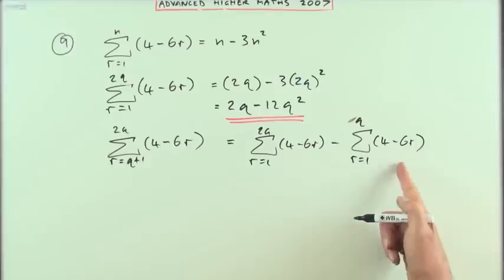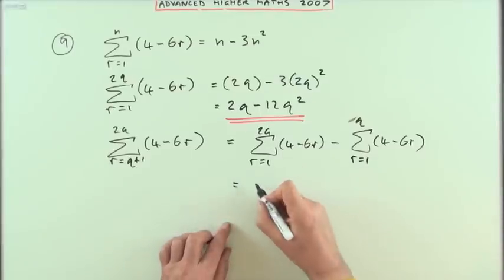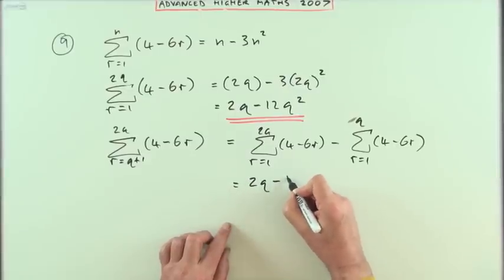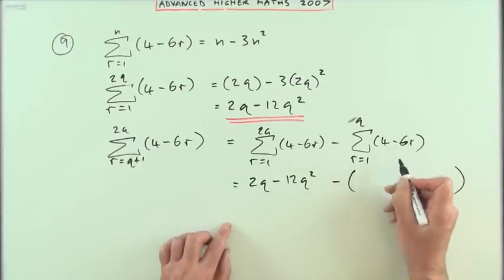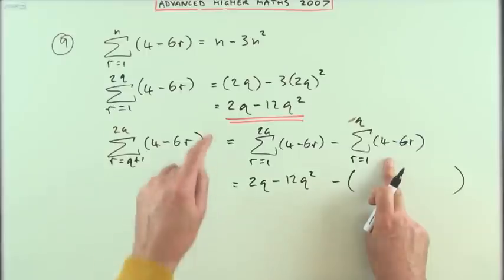Well, I've got that formula, so it's just a case of getting this one. Well, that formula, I'll put it down again, was 2q minus 12q squared, minus whatever this formula is, and that'll be exactly the same only with the n's replaced with q's.